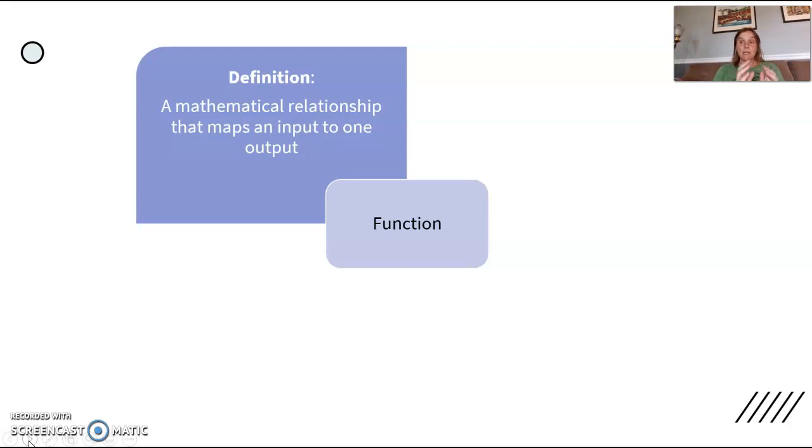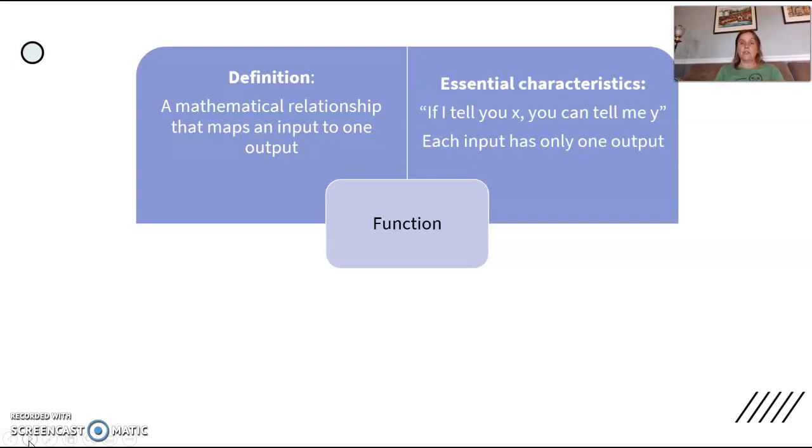That doesn't mean that three is the only number that gives you a seven as an output, but it means that everybody who puts a three in as an input will get a seven. Maybe a zero also gives you a seven. That's okay. But with a function, the input has to give you a predictable output.